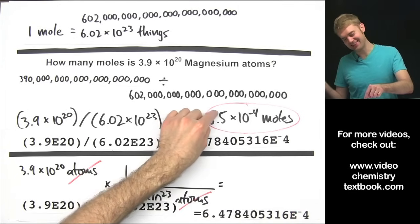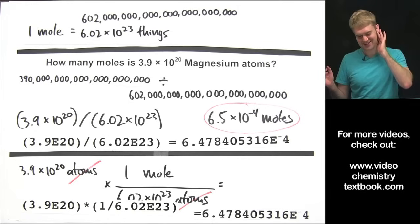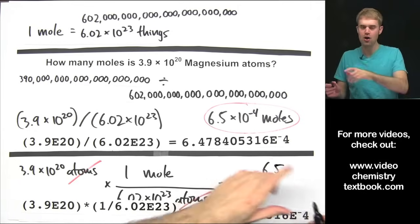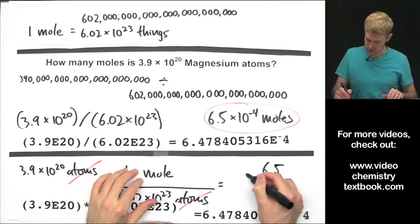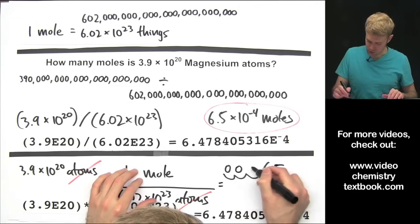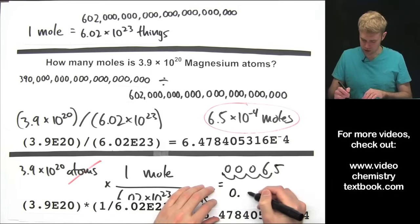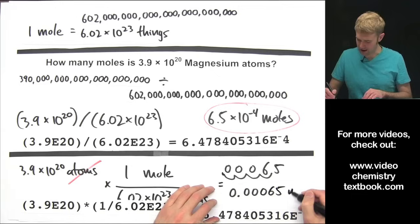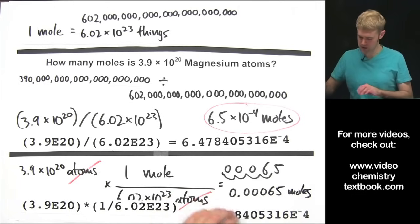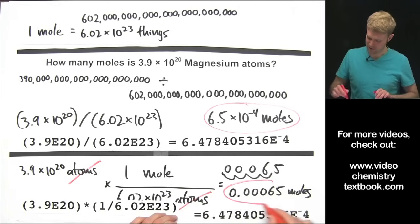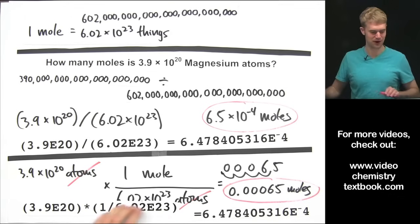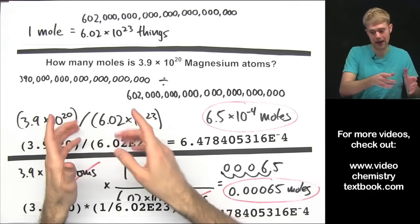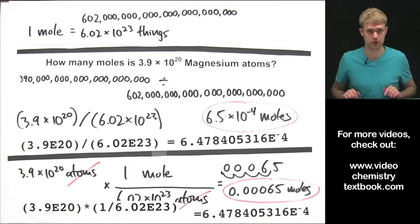Now, just once again, keep in mind that this with the 10 to the negative fourth isn't some creepy Martian number, but we're doing 6.5, moving the decimal 1, 2, 3, 4, and if we wanted to take this out of scientific notation, it would be 0.00065 moles. We can make this look like a real number as well. So, that is how we convert back and forth between moles and the number of atoms or molecules that we have.